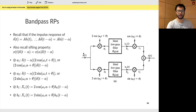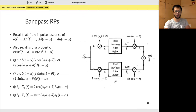At point a1, you take x(t) and multiply by 2cos(ωct + θ). Applying the shifting property — replacing all t's with α — you get 2cos(ωcα + θ) · δ(t−α). At a2, the same thing but with sine: 2sin(ωcα + θ) · δ(t−α). So at the top you have 2cos(ωcα) and at the bottom 2sin(ωcα), with the impulses still present.